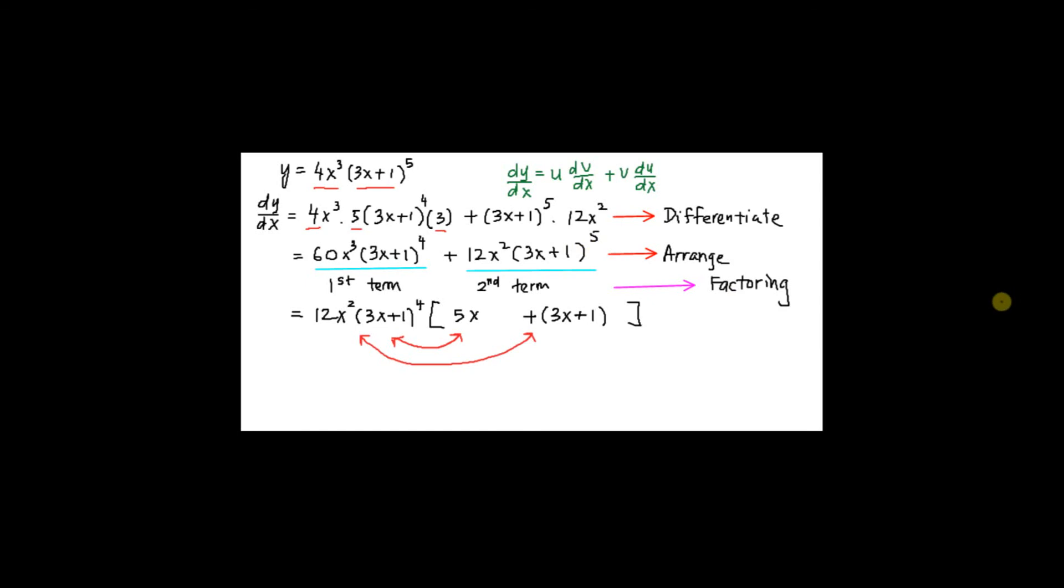To check this, 12x squared times 3x plus 1 power 4 times 5x, I will get back my first term. And 12x squared times 3x plus 1 power 4 times 3x plus 1 here, I will get back my second term.